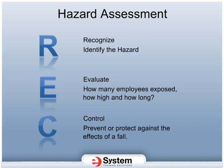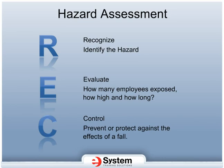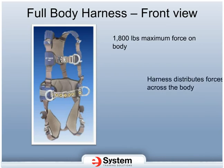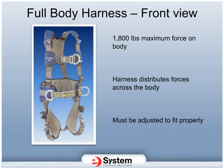Lastly, Control — this is the key. Control means how you will either prevent the fall from occurring or protect against the effects of the fall. Based on regulations and standards, the maximum force allowed on a human body during a fall is 1,800 pounds. The purpose of a harness is to distribute the forces of a fall proportionately throughout the thighs, pelvis, waist, and upper body. It is very important that a harness be adjusted properly to ensure the forces are evenly spread and localized to specific areas of the body that are more able to handle the force.